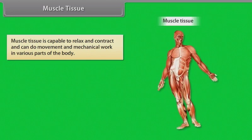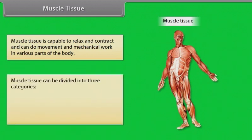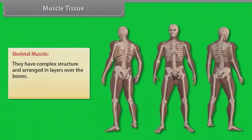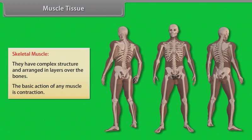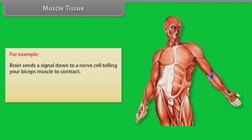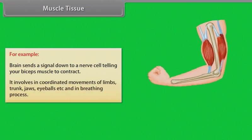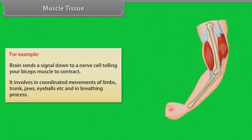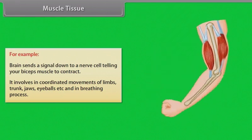Muscle tissue is capable of relaxing and contracting, and can perform movement and mechanical work in various parts of the body. Muscle tissue can be divided into three categories: skeletal, smooth, and cardiac. Skeletal muscles have a complex structure and are arranged in layers over the bones. The basic action of any muscle is contraction — for example, the brain sends a signal down a nerve cell telling the biceps muscle to contract. Skeletal muscle is involved in coordinated movements of limbs, trunk, jaws, and eyeballs, and in the breathing process.